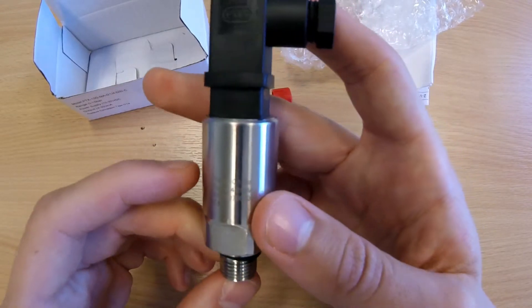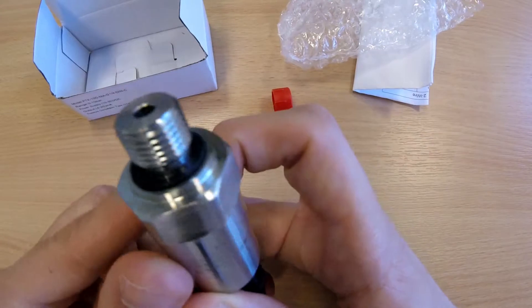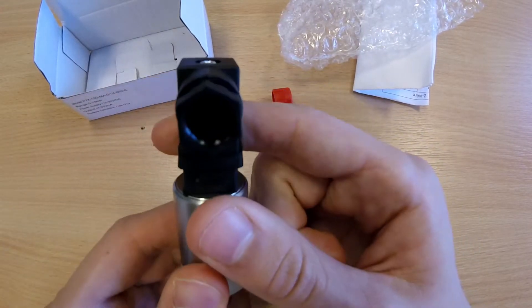It's a pressure transmitter loop powered 4-20mA output with a ¼ inch process thread right angle DIN connector.